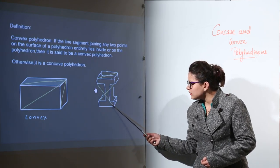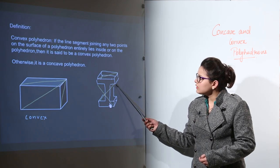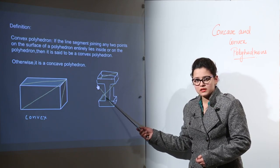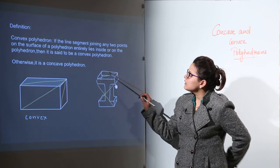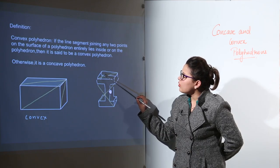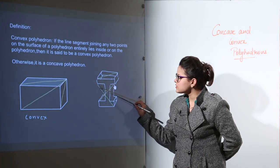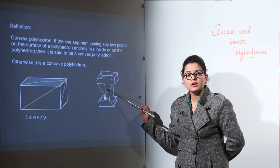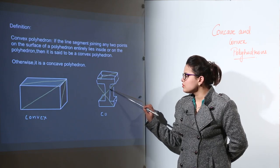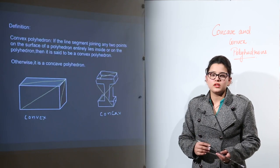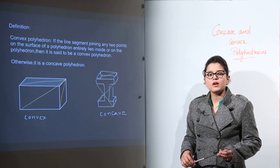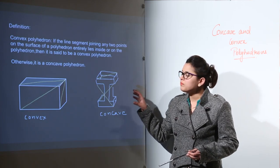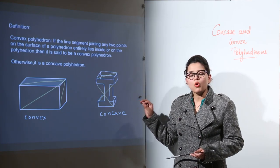Let us talk about the next one. The polyhedron is having two vertices joined by a line segment, another pair of vertices joined by another line segment, and another two vertices joined by a third line segment. We can clearly see that the first line segment is lying on the polyhedron, but the remaining two are not lying inside the polyhedron nor on the polyhedron. So this is the case of a concave polyhedron.